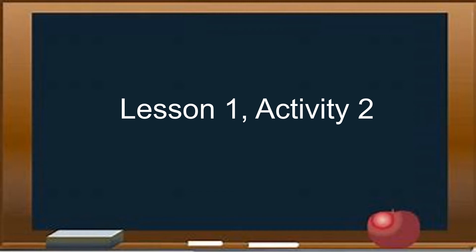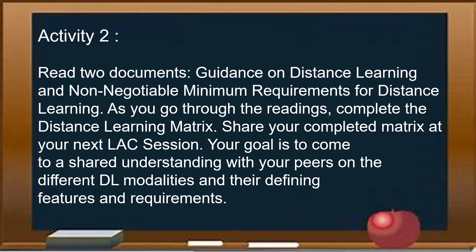Now let's proceed to lesson one activity two. The direction goes like this: read two documents — guidance on distance learning and non-negotiable minimum requirements for distance learning. As you go through the readings, complete the distance learning matrix. Share your completed matrix at your next class session. Your goal is to come to a shared understanding with your peers on the different distance learning modalities and their defining features and requirements.